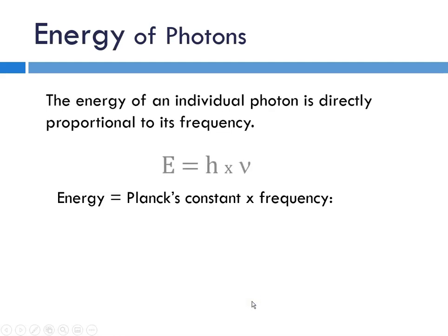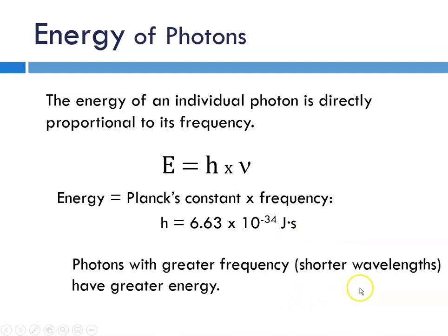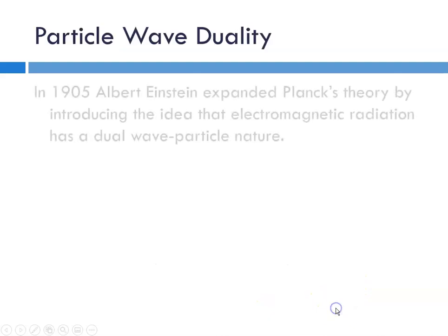The energy of an individual photon is directly proportional to its frequency. E equals H times frequency. Energy is equal to H, which is given the name Planck's constant, and nu is the frequency. H has a value of 6.63 times 10 to the negative 34th joule seconds. Joules is an energy unit, and seconds is time. Photons with greater frequency have greater energy.